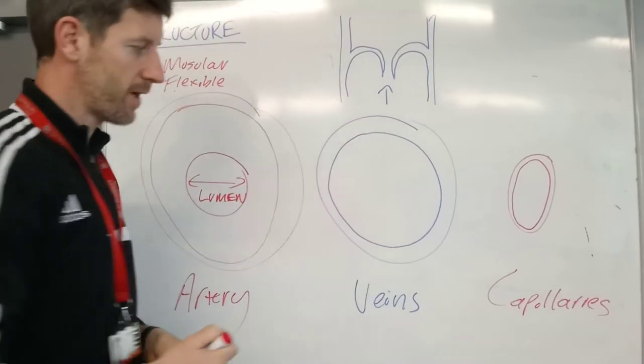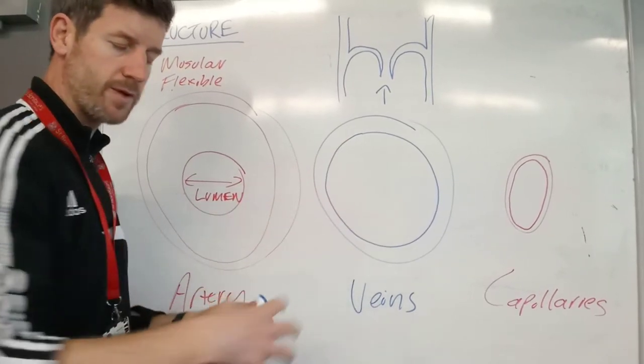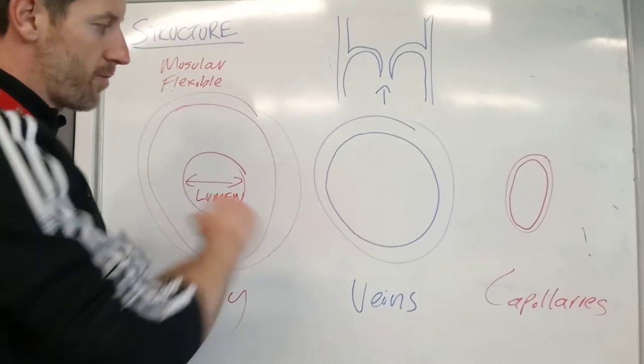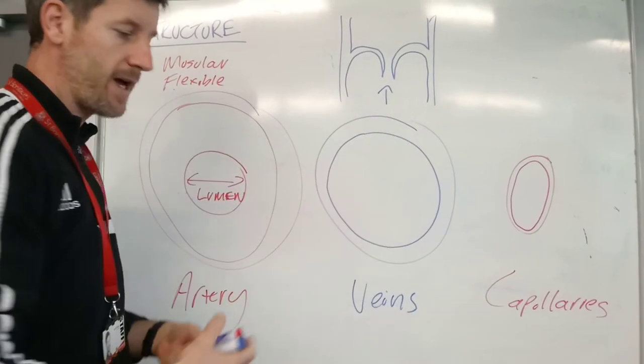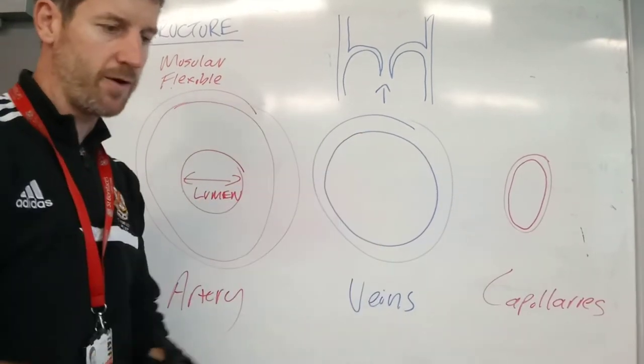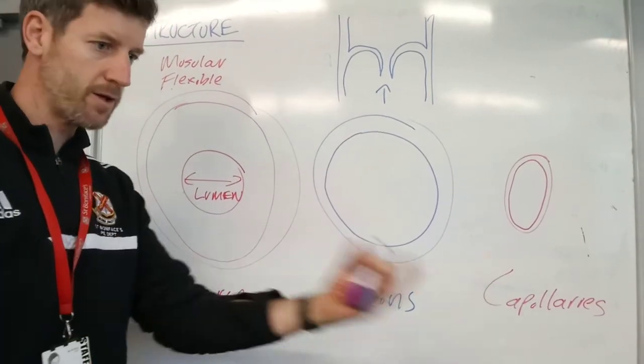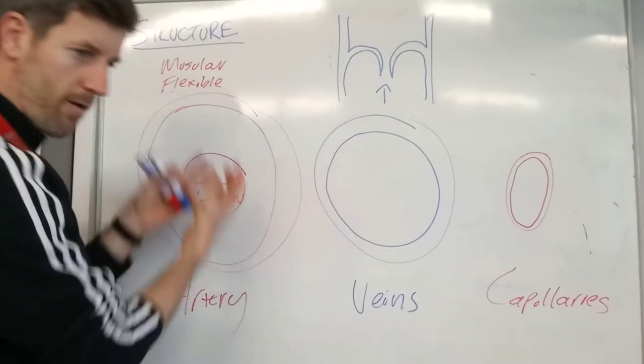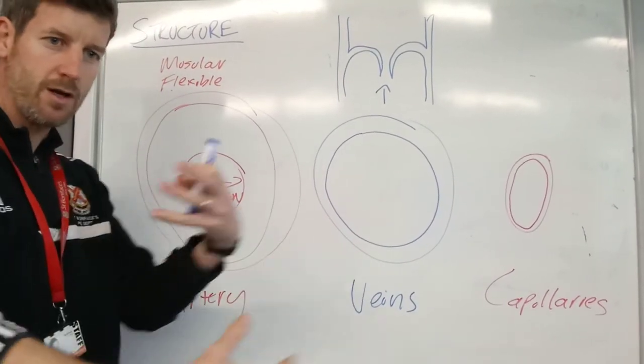The veins are the vessels that carry deoxygenated blood back to the heart. The blood pressure by this point in the veins is a little bit lower because you can imagine the blood's rushed out of the heart, gone to the muscles, it's then been distributed to all the muscles and tissues in the body, and then now it has to come back to the heart, so there's less pressure. It's slowed down by that point.